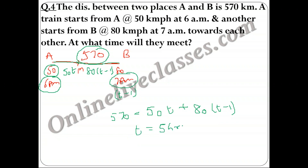So 5 hours after 6 a.m. is 11 a.m. The two trains meet at 11 a.m. If the distance from A to the meeting point had been asked, you would simply substitute t = 5 into 50t, giving 250 km. Kindly pause the video and note down the solution.